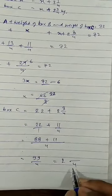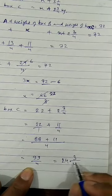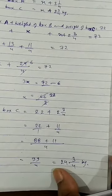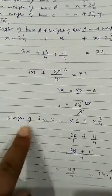So 4 times 24 is 96 and 3 is the remainder. So this is the answer. 24 and 3 upon 4 kg is the weight of the box C.